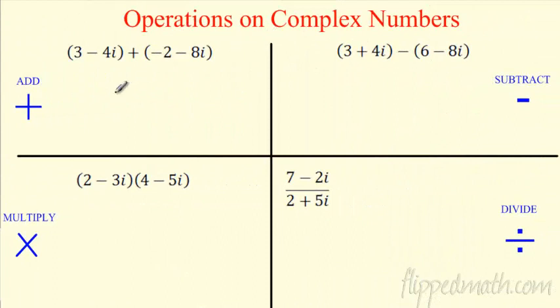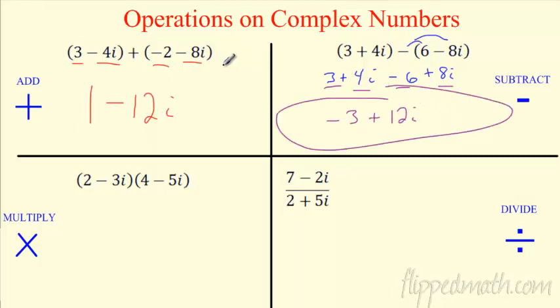All kinds of operations of these complex numbers. Add, subtract, multiply, and divide. So when you add them, no worries. You just add the real parts. 3 plus a negative 2 is 1. Then you add the imaginary parts. Negative 4 plus negative 8 is negative 12i. So no problem there. What about subtraction? Just be careful when you subtract. I kind of rewrite it because you're subtracting all of this. So it's really like saying minus 6 plus 8i. And again, once you do that, you're golden, you just go ahead and say, oh yeah, my real parts are negative 3. My imaginary parts are 12. Boom, there it is. Love it.